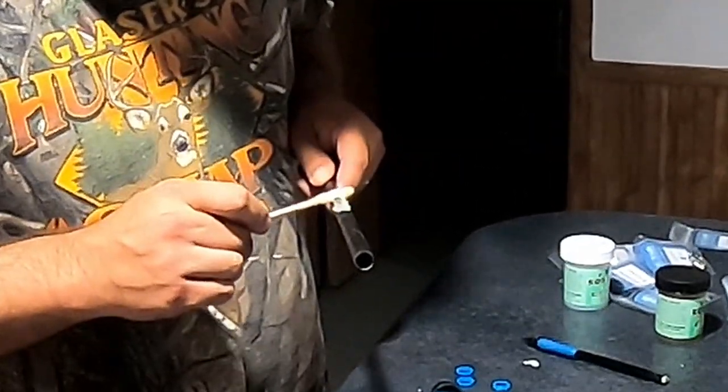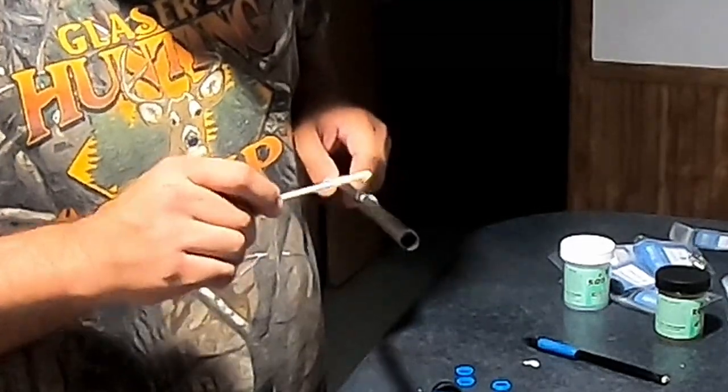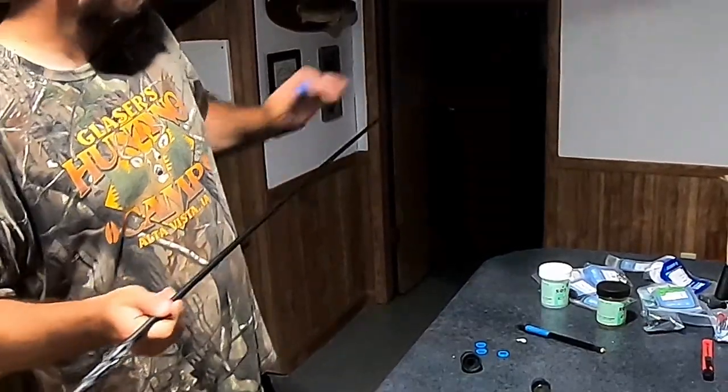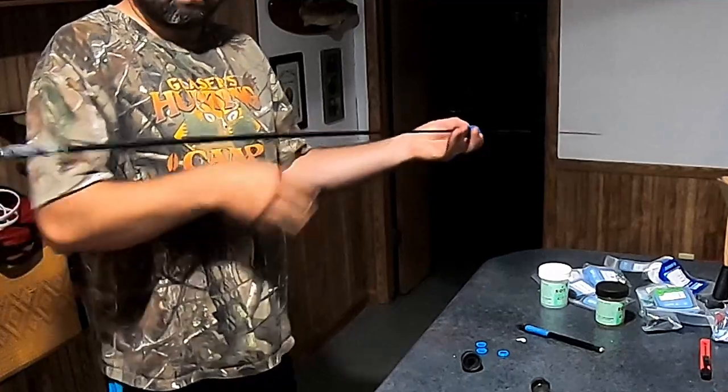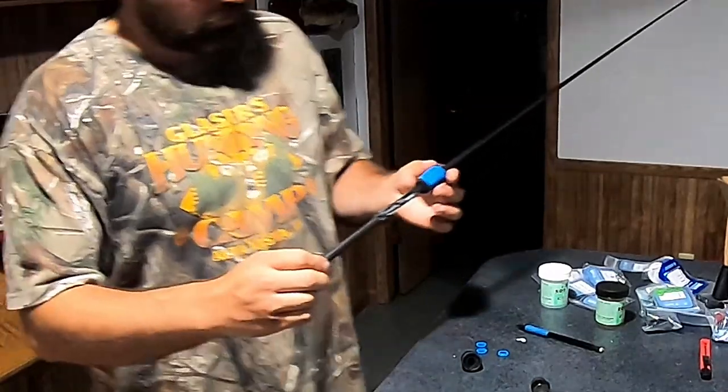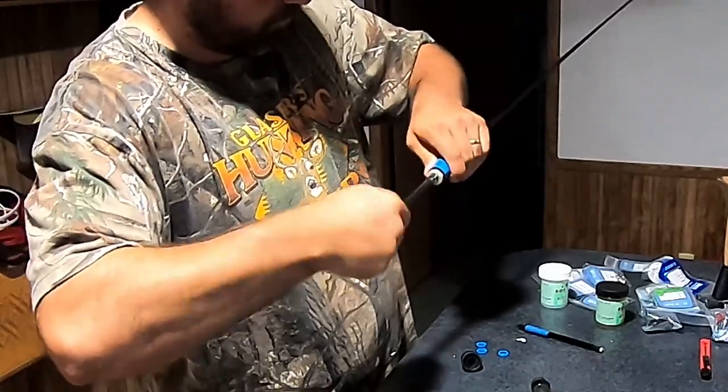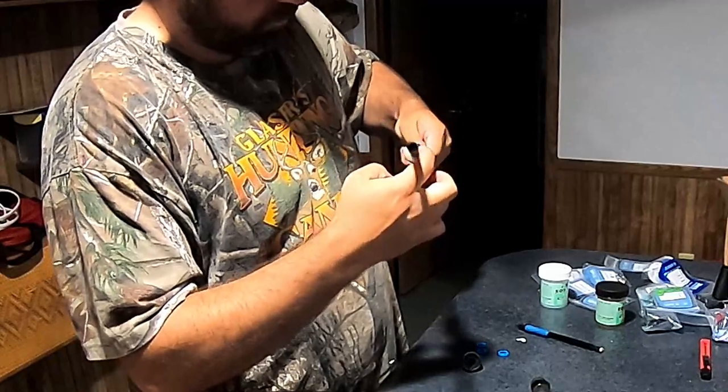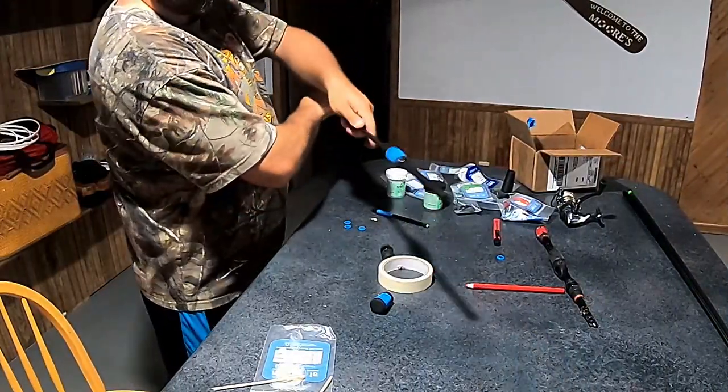Then once you have those marked out, we'll take those off the rod, mix up a two-part rod building epoxy, and spread that around the blank in the location where each piece goes. You'll slide those on one at a time, and as you do it, you'll notice that you push a lot of the glue with the component you're putting on. When you're putting on the rear grip, you're going to push a bunch of that glue out to the back. Just take your finger and wipe that off, or take a rag, get that nice and cleaned off before you move on to the next one.